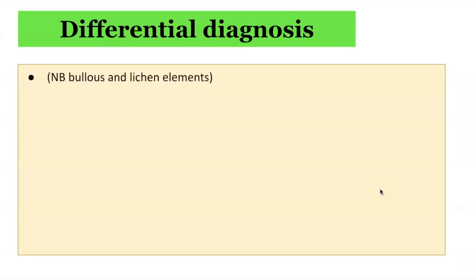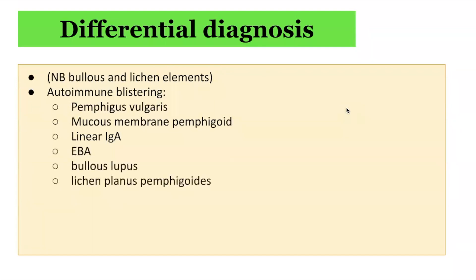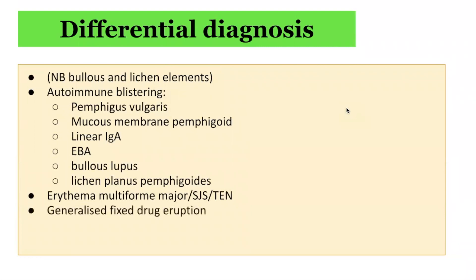In terms of differential diagnoses, relevant to the bullous and lichenoid elements seen in paraneoplastic pemphigus, these include pemphigus vulgaris, mucous membrane pemphigoid, linear IgA, epidermolysis bullosa acquisita, bullous lupus, and lichen planus pemphigoides. Erythema multiforme major, Stevens-Johnson syndrome, and toxic epidermal necrolysis are also in the differential. Generalised fixed drug eruption, graft-versus-host disease, as well as generalised viral infections such as HSV are also considerations.